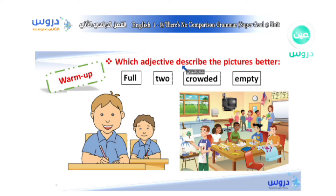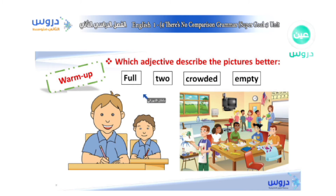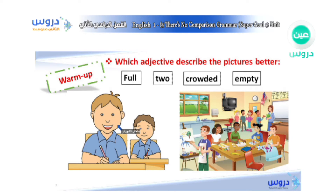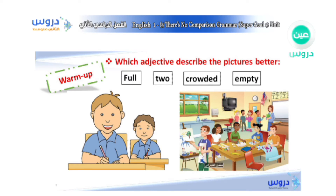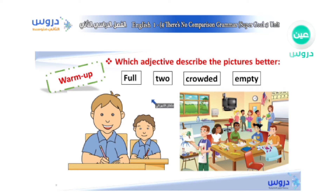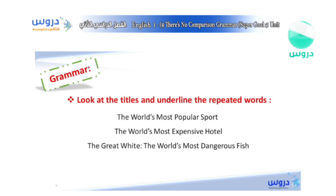First we have a warm-up: which adjective describes the pictures better? Picture number one — we have: full, two, crowded, and empty. What do you think? Excellent — 'two', that's right, because there are two people. For picture number two, we can say 'full' or 'crowded' — yes, that's right, many students inside the classroom. Very nice, excellent everyone.